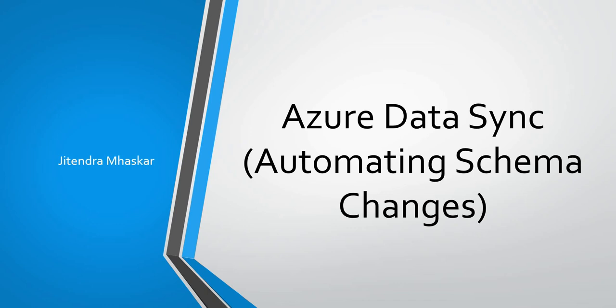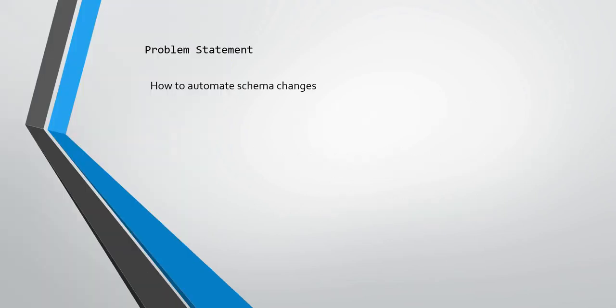Hello friends, in this video I'm going to show you how to automate the schema changes with Azure Data Sync. In my earlier video I had shown how to synchronize data between several databases with Azure Data Sync. The problem is that if schema changes happen on tables which are part of a synchronization group, how to automate that? If there are hundreds of endpoints, doing it manually becomes difficult, so the best way is to automate schema changes — a one-time effort that helps throughout the lifecycle.